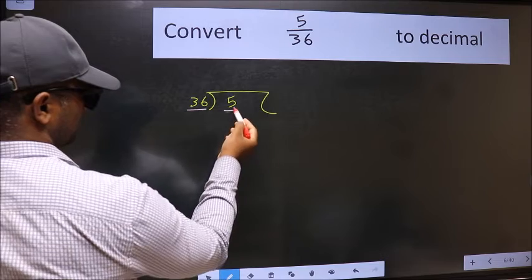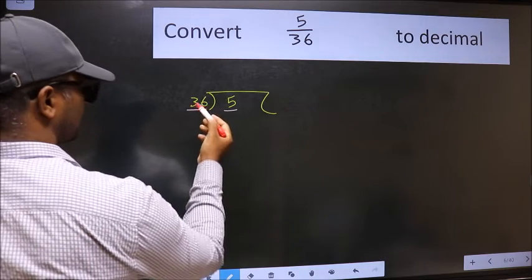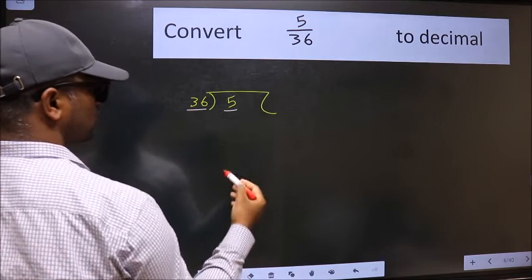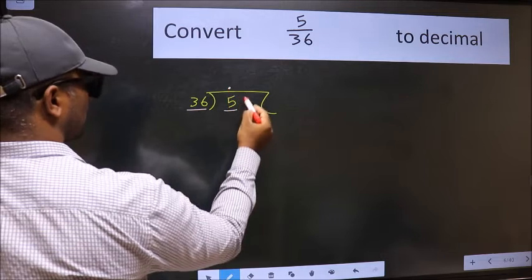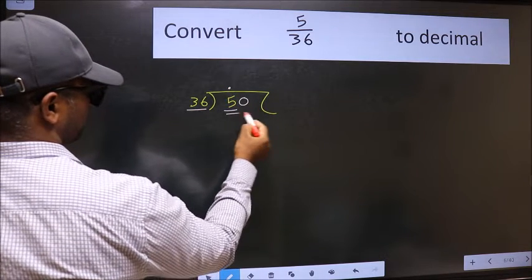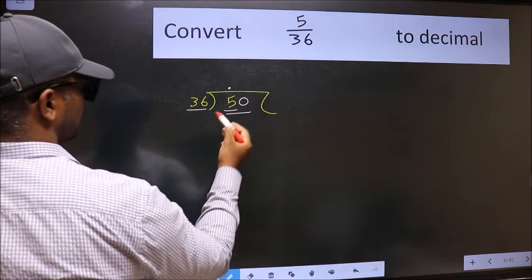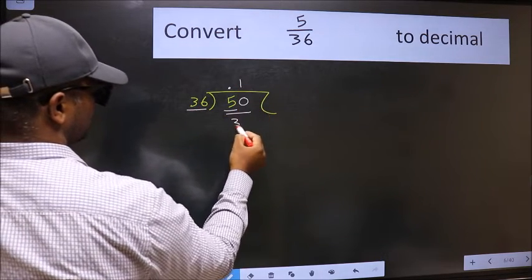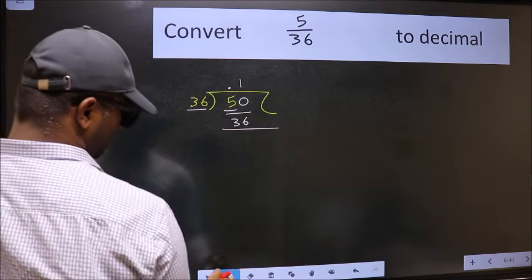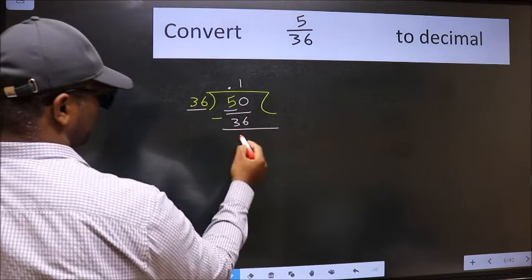5 is smaller than 36, so we should put a dot and take 0. So 50. A number close to 50 in the 36 table is 36 once, which is 36. Now we subtract and get 14.